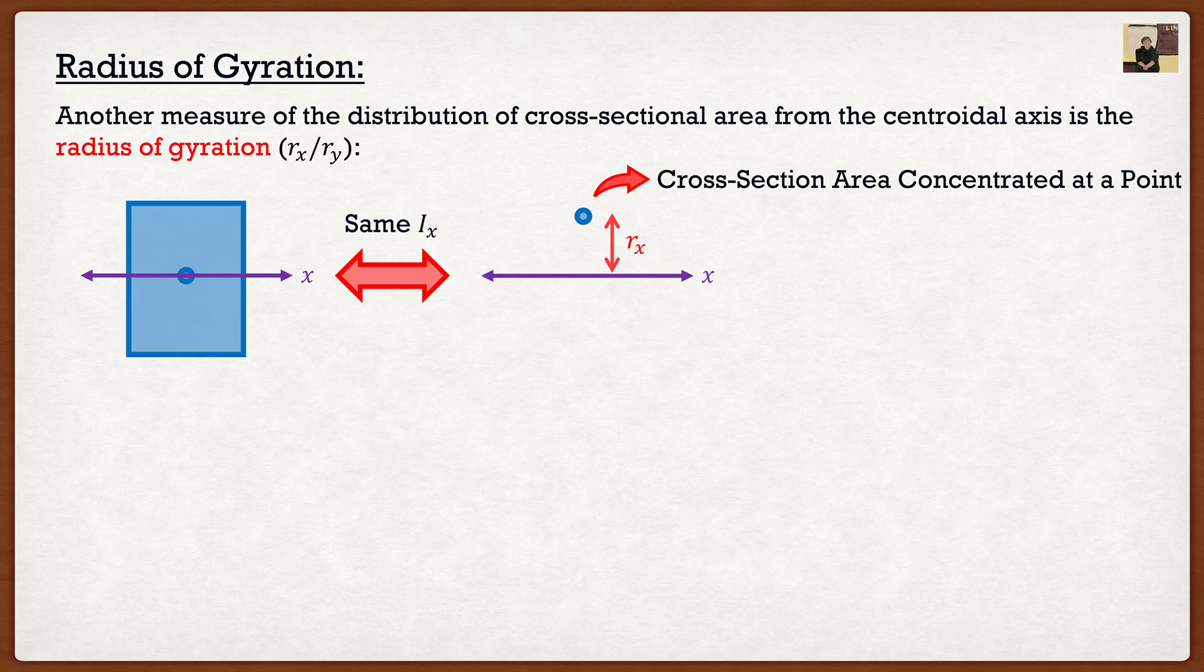Now if you want to calculate it, it's pretty simple, it's just going to be the square root of moments of inertia divided by the area. So if you found moments of inertia, chances are you know area at that point. All you need to do is divide one by another and then square root it. So it's a piece of cake.